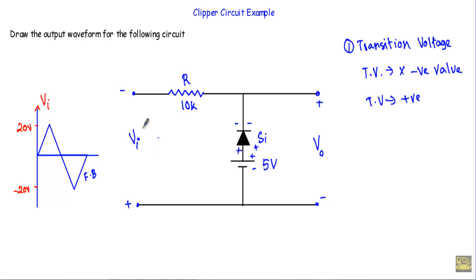When the input voltage is greater than the transition voltage, the diode will be in reverse bias. Now let me find out that transition voltage by considering the positive half cycle of the input voltage.